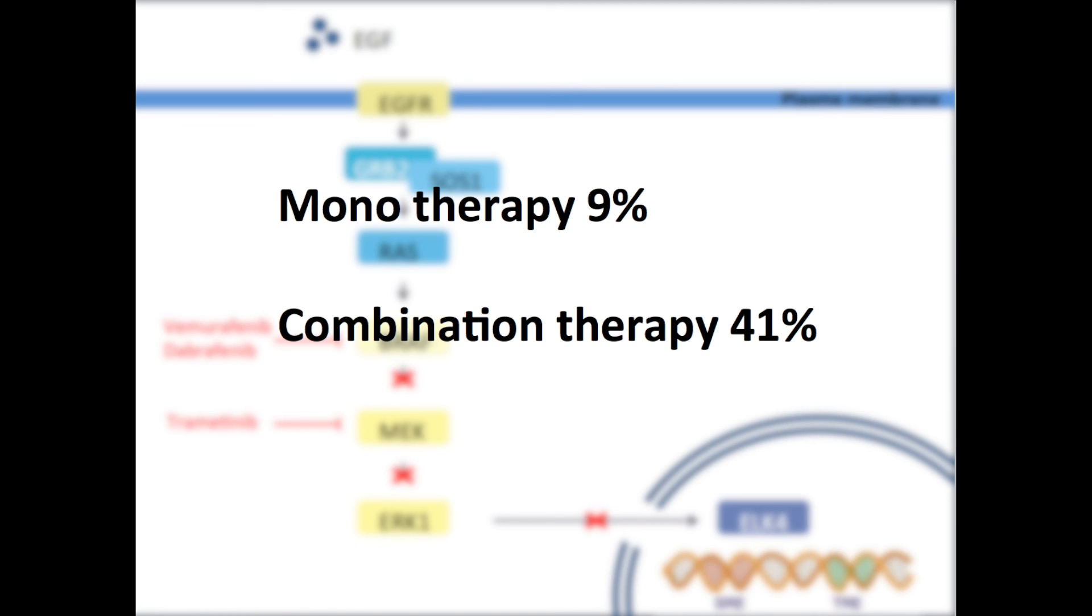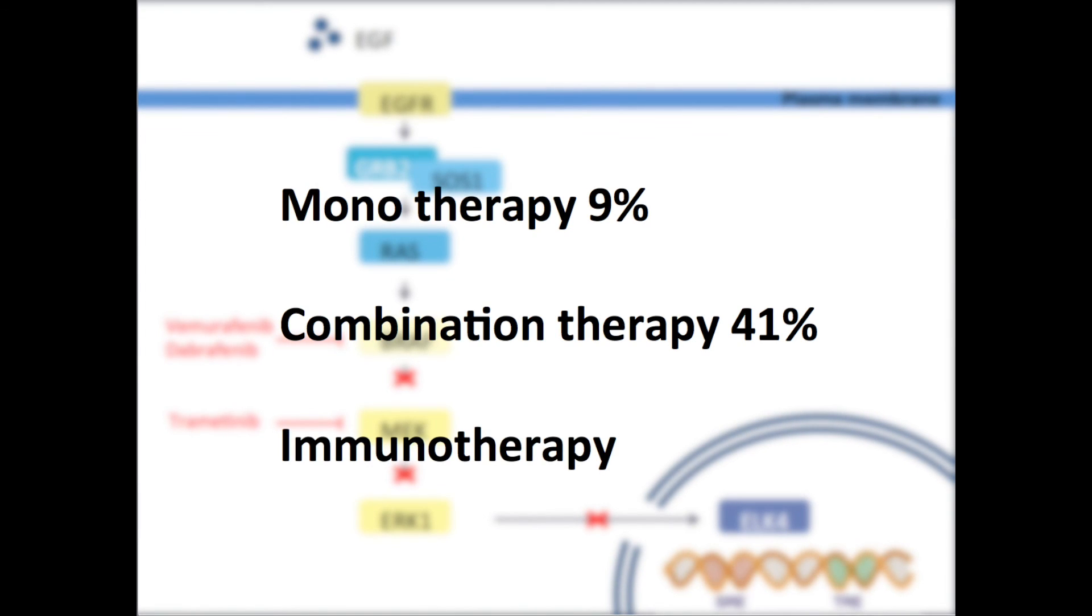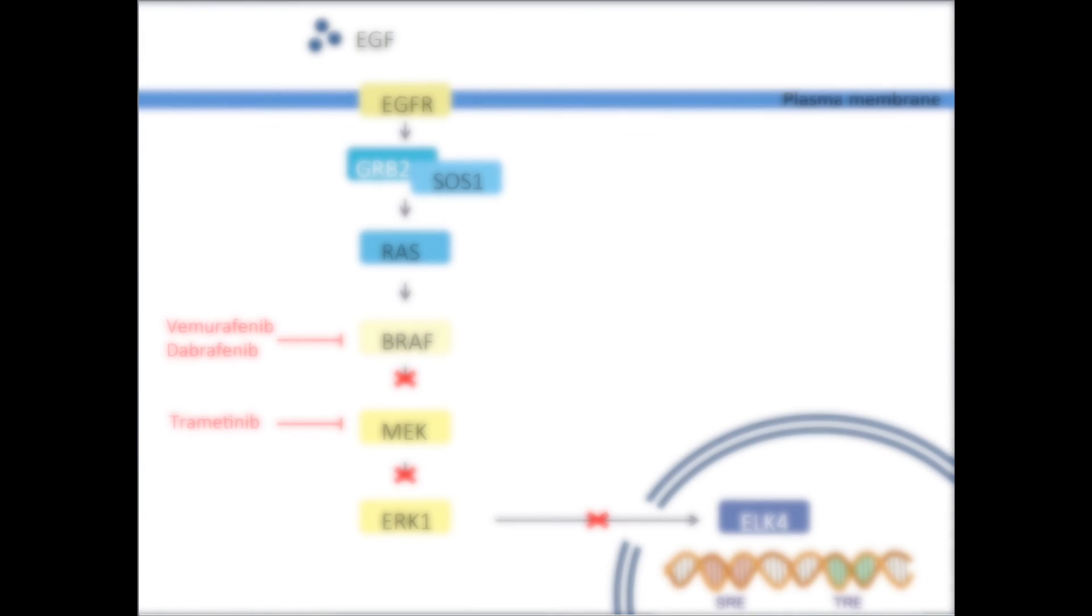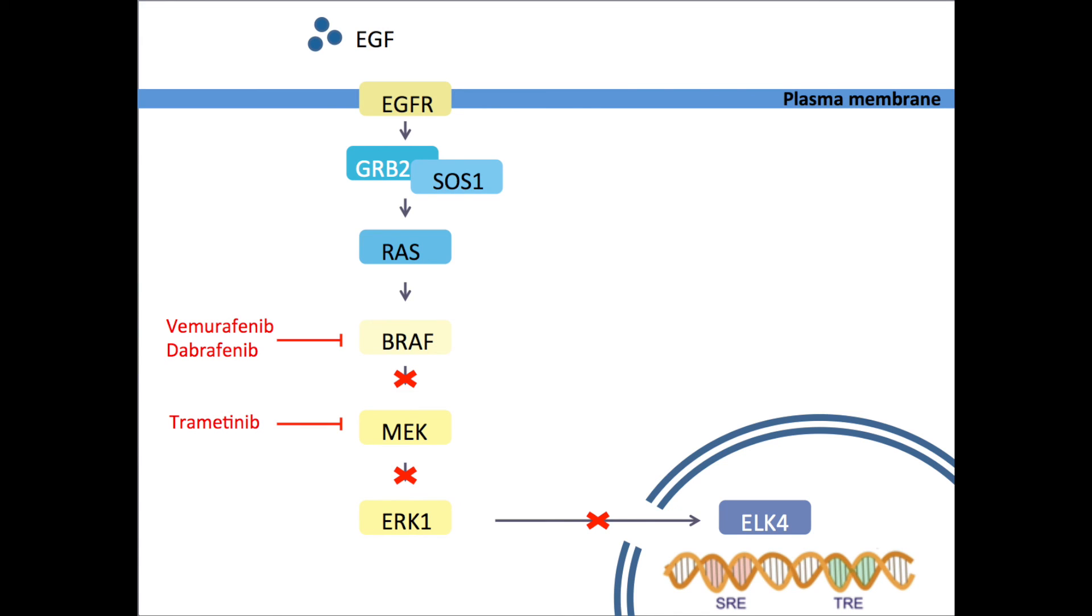Another very promising type of therapy in melanoma is immunotherapy, in which the patient's own immune system is activated to fight the cancer. At the moment, the challenge is to find combinations of therapies using traditional chemotherapy, targeted therapy, or immunotherapy, harboring the best results with the least side effects.